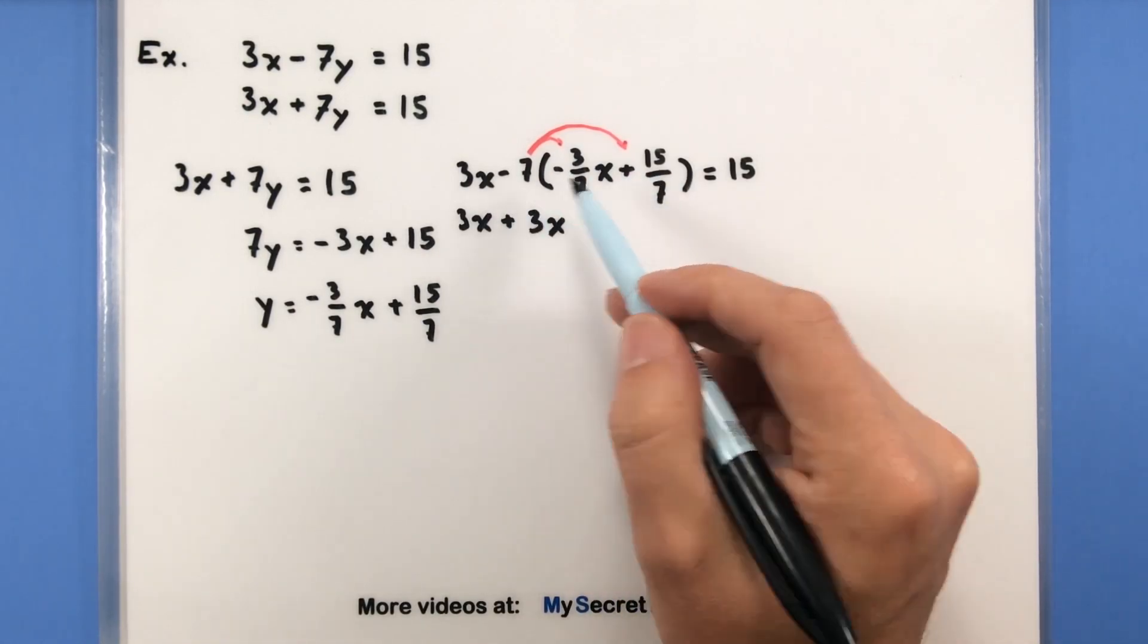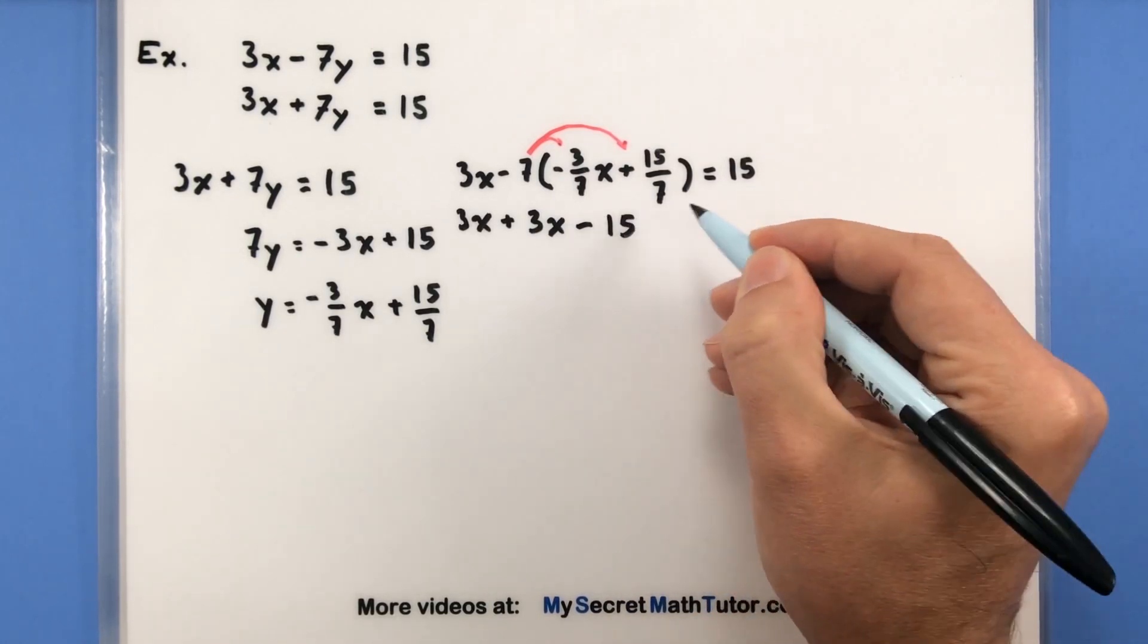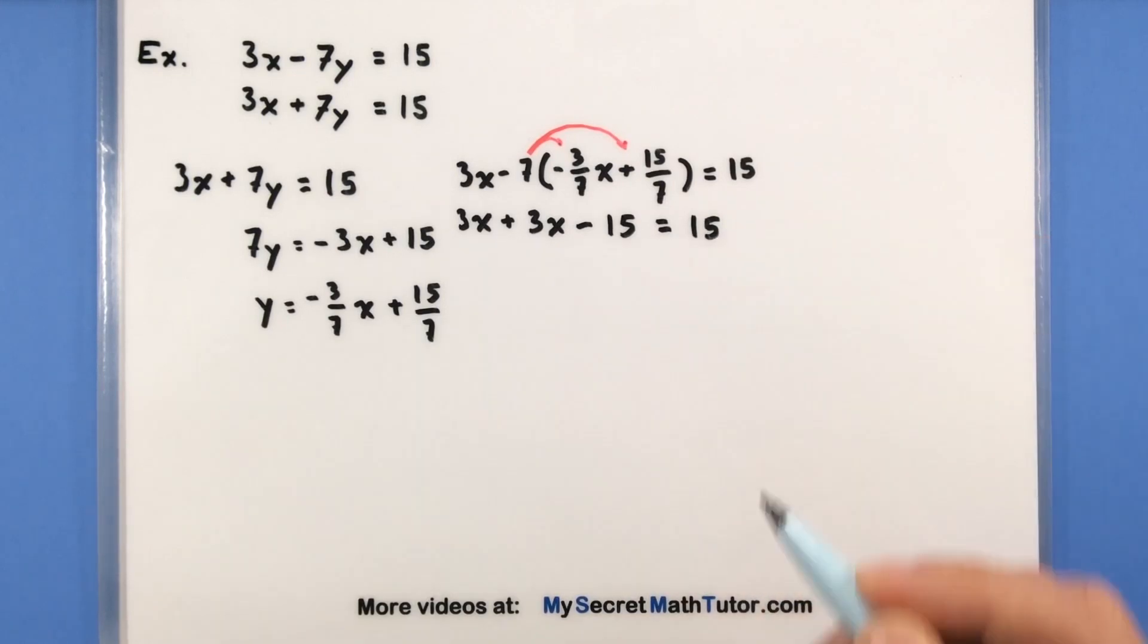All right, doing the same thing over here. Negative times a positive is a negative. 7's will go away, but we'll still have this 15. All right, excellent.